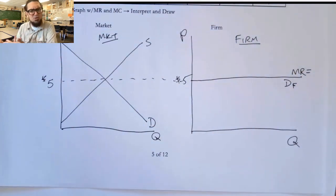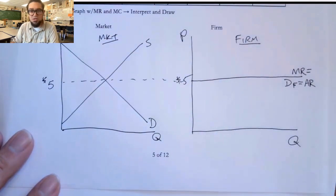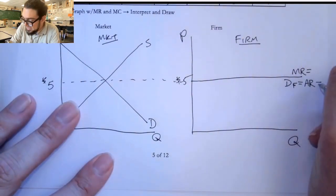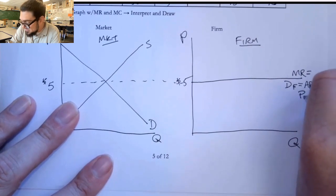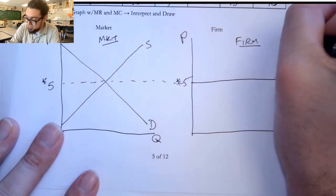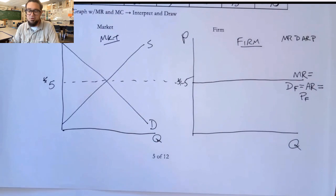If somebody tried to charge a dollar more, they lose all their customers. That's a perfectly elastic demand curve. It's infinitely responsive. So we have a perfectly elastic demand curve for the firm's products. I'm going to put a little F there. That's the demand curve that the firm sees. It's also the average revenue. And we didn't really talk about average revenue, but it's just like, what's the average amount of revenue that comes per unit? It happens to be the same value. And that's equal to the price that the firm charges.